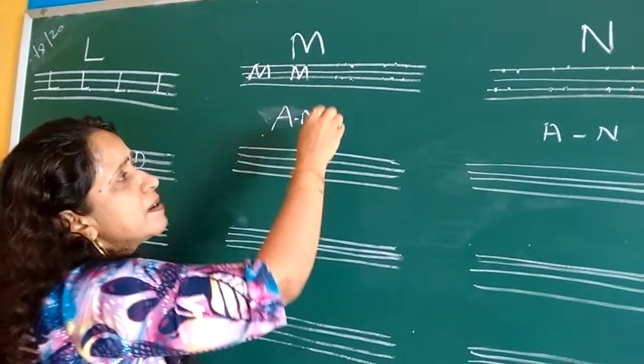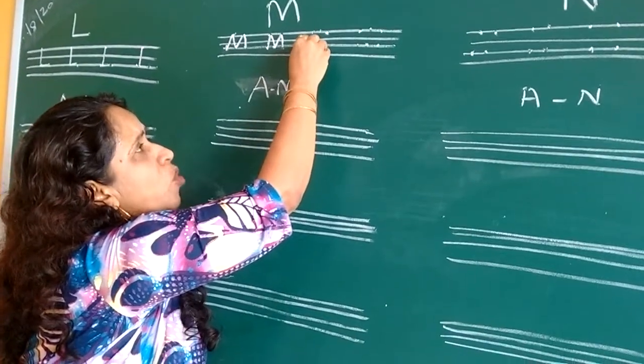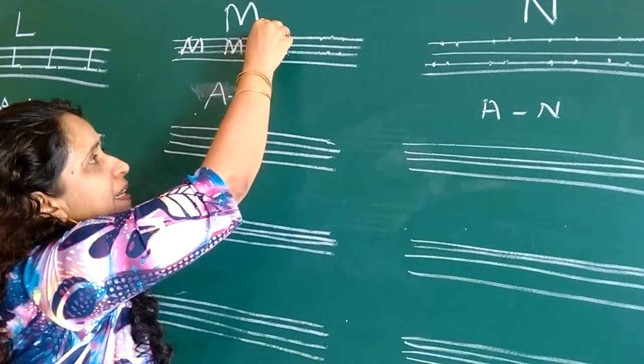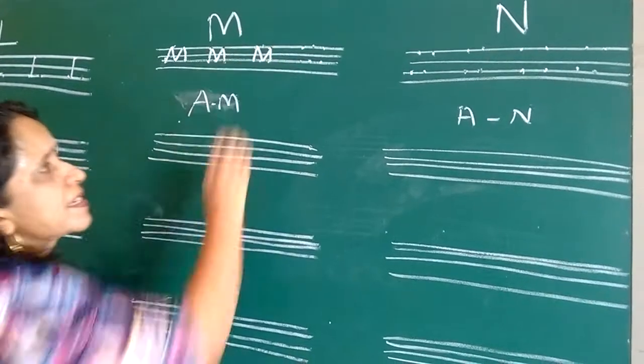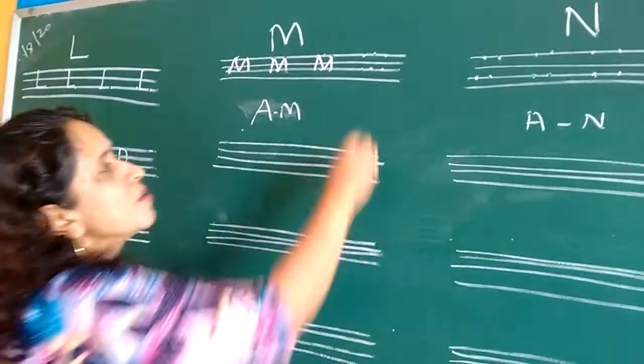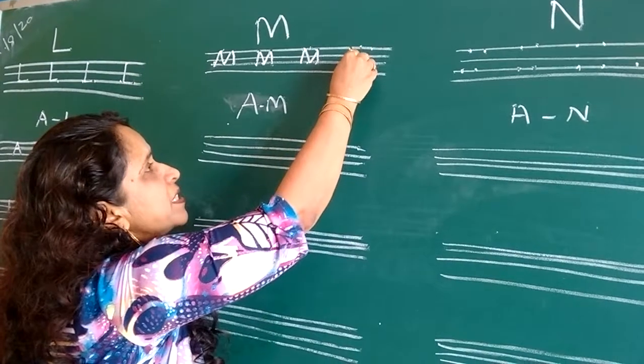You have to start from this third line. Go up. Slanting line, slanting line, slanting line, standing line. Like this, you have to draw M, zigzag line.